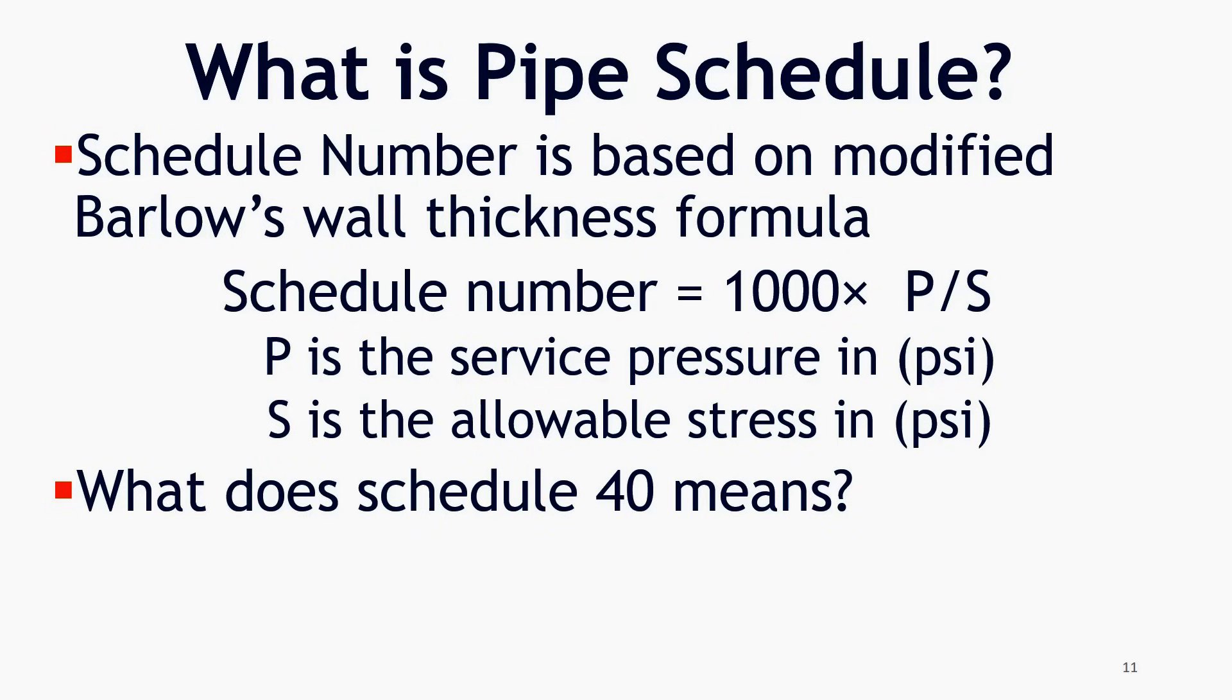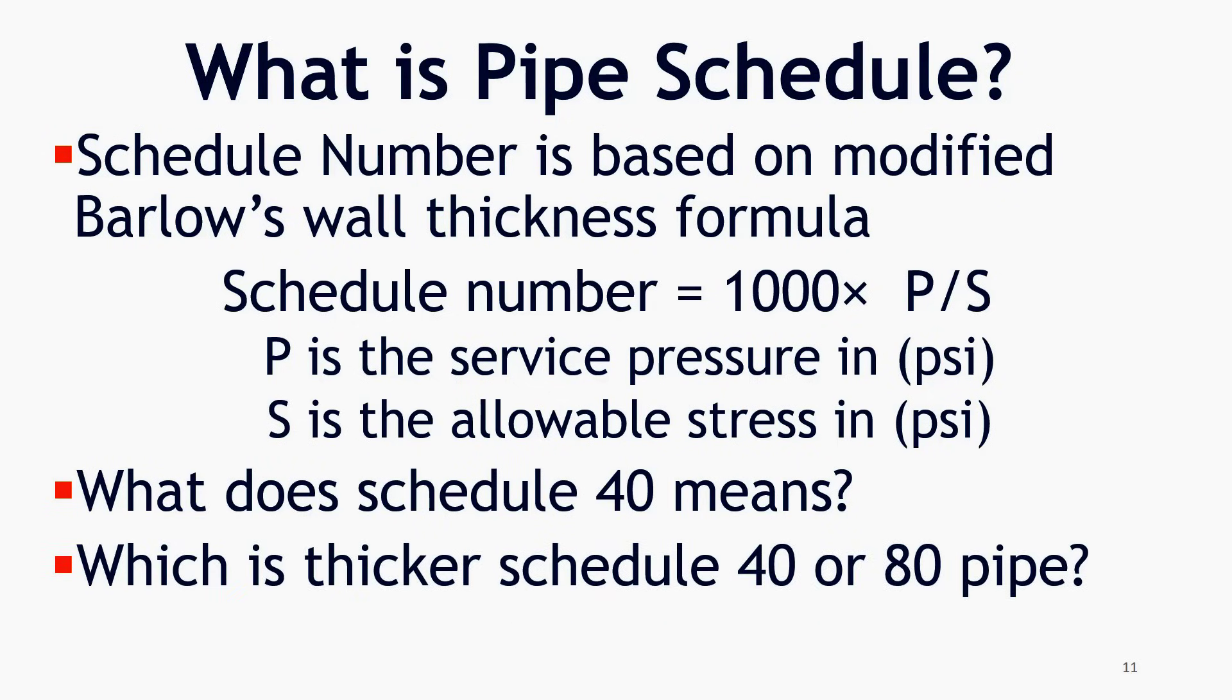Now, can you tell me which is thicker? Schedule 40 pipe or schedule 80 pipe? Schedule 80 pipe is thicker than schedule 40 pipe. Look at the formula of schedule number. Allowable stress for material at given temperature is fixed. That means with an increase in service pressure, schedule number will increase which is nothing but pipe wall thickness designator.